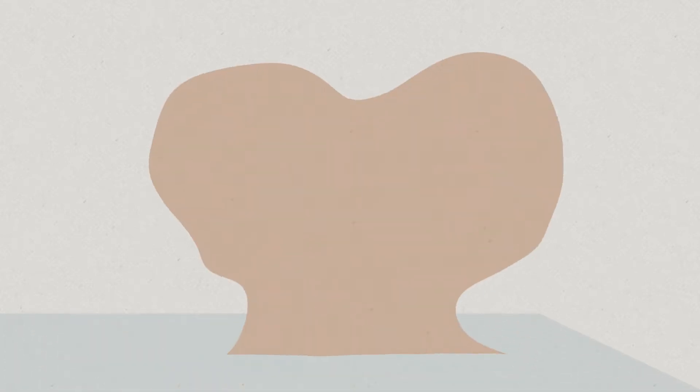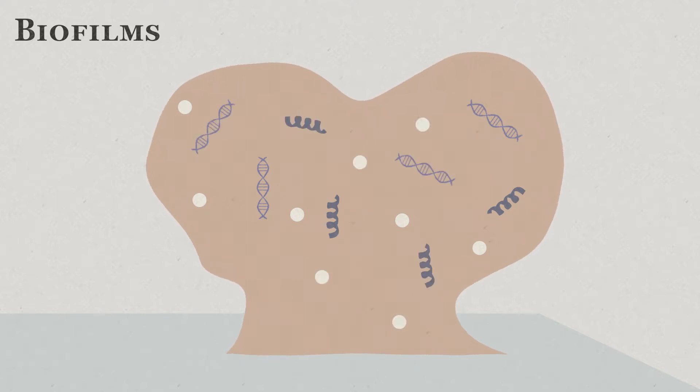Biofilms are groups of microorganisms growing together where the cells stick to each other embedded in a tough, supportive network of sugars, proteins, and DNA.